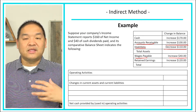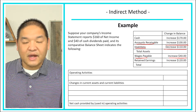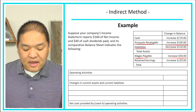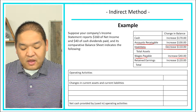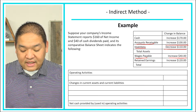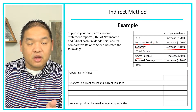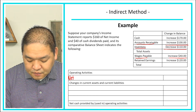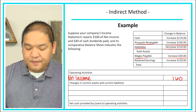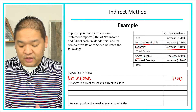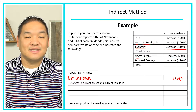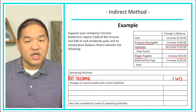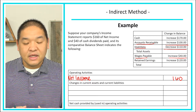In the operating activity section, we only care about accounts receivable, inventory, and wages payable. The first line is net income: $160. Following the expanded method, the next step is to add back depreciation — but in this example there is no depreciation, so we skip it. We do have a separate example later where depreciation is included. Moving on, we look at decreases in current assets.